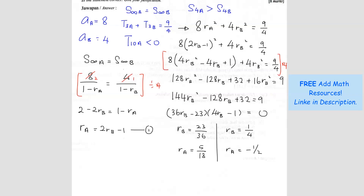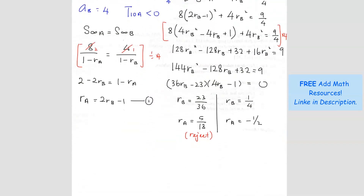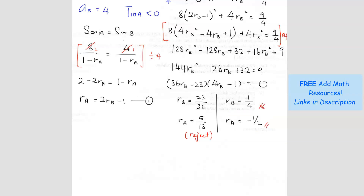We need to reject one solution. The condition states the 10th term of sequence A is negative. If RA = 5/18, the sequence only gets smaller but never turns negative, so that solution must be rejected. Only RA = −1/2 produces a negative 10th term. Therefore, we take RA = −1/2 and the corresponding RB = 1/4.